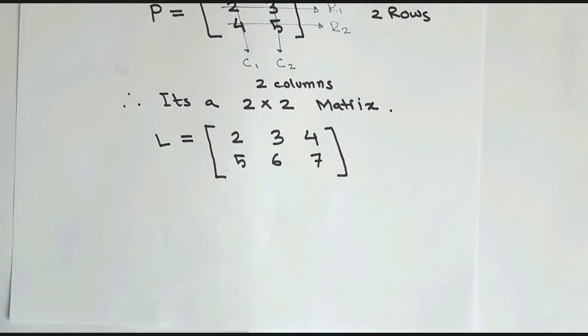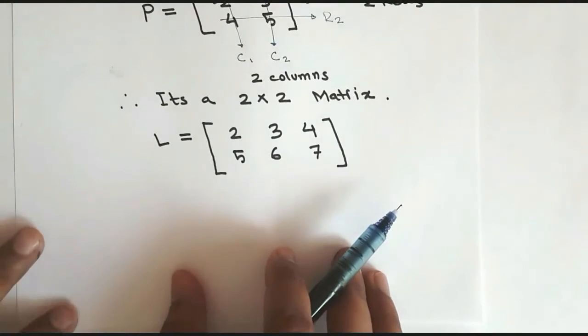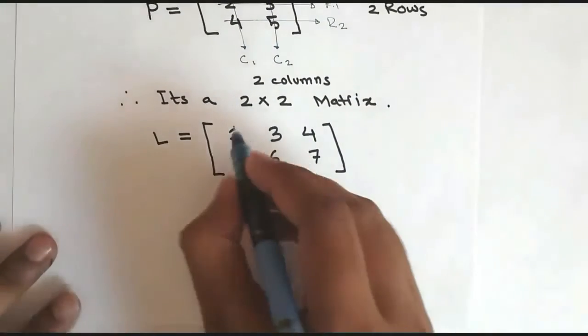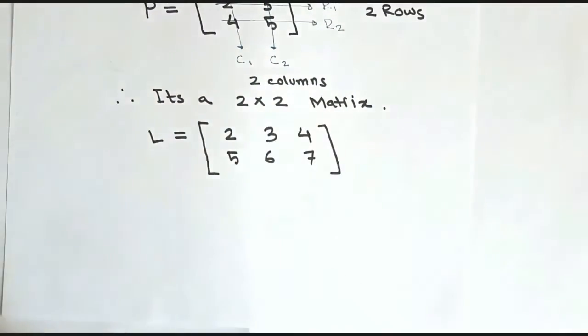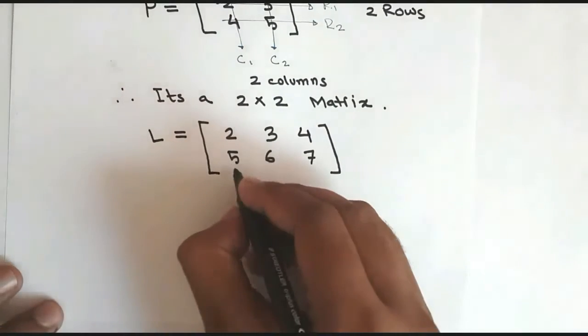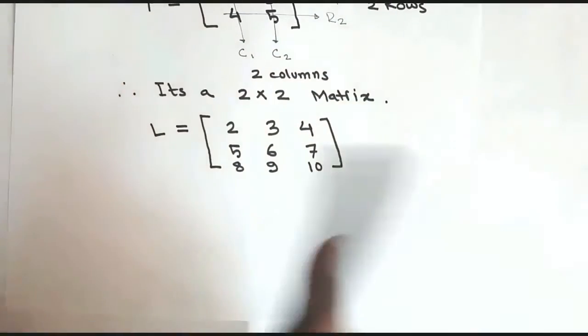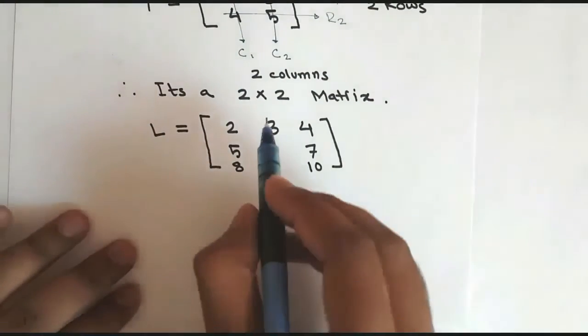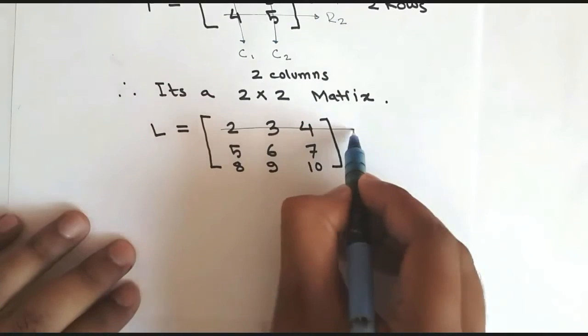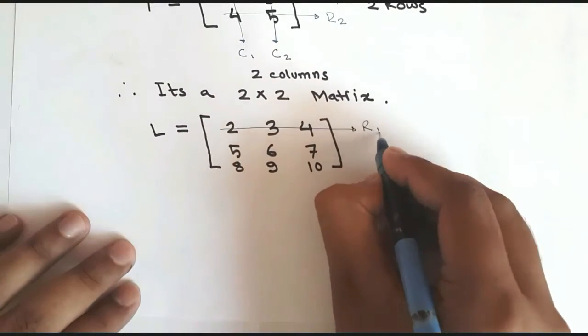So let us take L, and its elements are two, three, four, five, six, seven, rest of the elements are, let me take, yes, eight, nine, and ten.